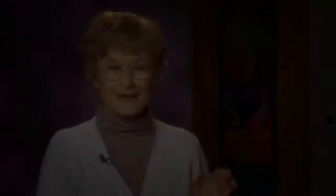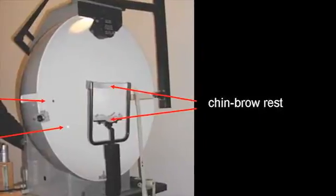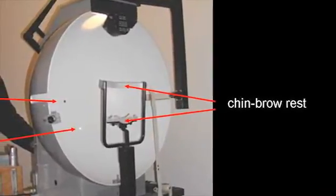We use something called a hemispheric perimeter. It's actually a white painted hemisphere, very smooth, completely simple inside. The instrument projects a light onto that surface, and that light can appear in any place in the field. It can be moved — it can be static. You move the target; it's kinetic. That was the old way of doing things, and we used something called a Goldman kinetic perimeter to do that.